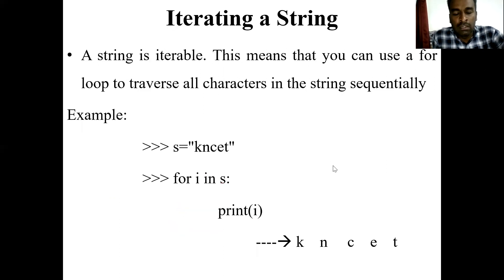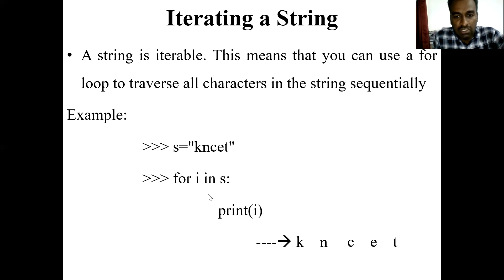Next, how to iterate a string. A string is iterable, so we can iterate it using a looping statement — specifically a for loop — to traverse all the characters in the string sequentially. For example, s = 'kncet'. Using 'for i in s', i[0] is k, i[1] is n, and the next characters are c, e, t. The string is traversed character by character and each character is printed as output. That is iterating a string.